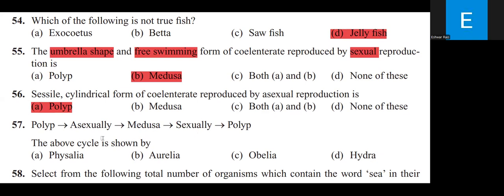The life cycle showing metagenesis (alternation of generations) is exhibited by Obelia. Obelia exhibits metagenesis, which is also called Alternation of Generation.